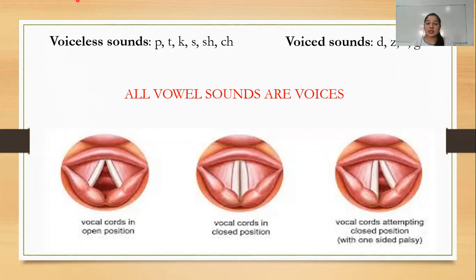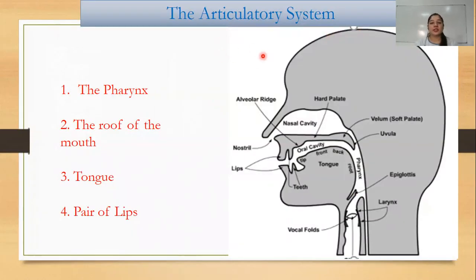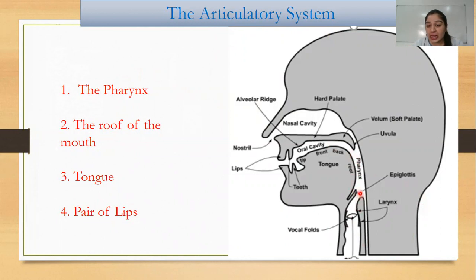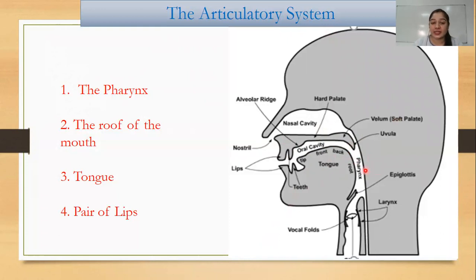Now the other part is the articulatory system. The articulatory system consists of four parts: number one, the pharynx; the roof of the mouth; the tongue; and the pair of lips. We have understood what the larynx is and what the vocal chords are. The larynx position is at the top, above which is the epiglottis, and then the oral cavity — which is the mouth cavity — also called pharynx.